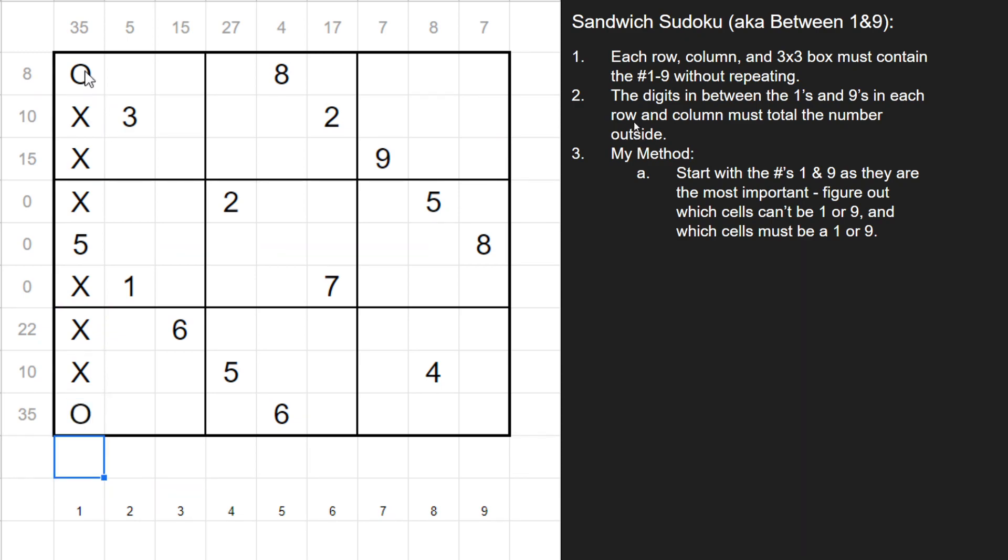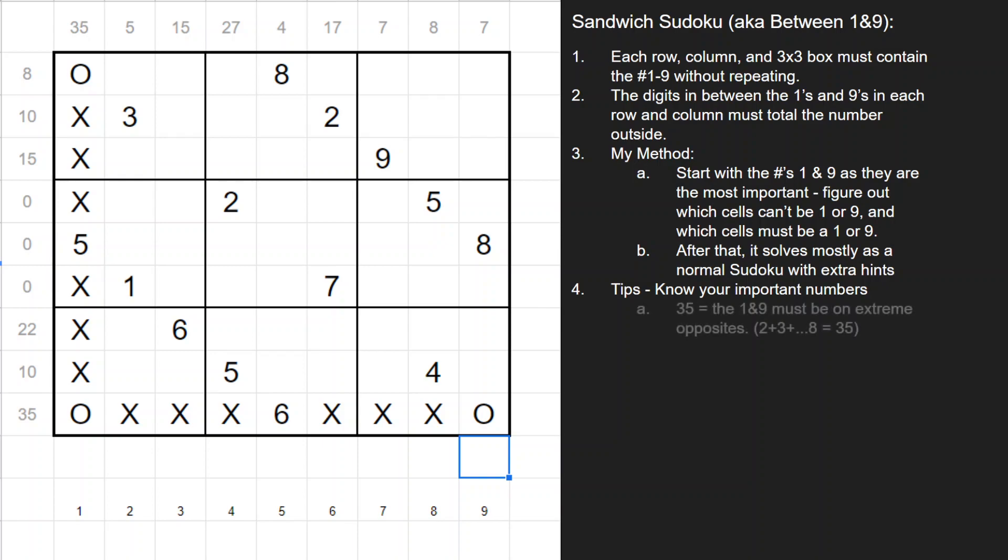That way I know that the 1 and the 9 must be in those cells. And then the same thing can be done with this bottom row here. Here we know that the 1s and 9s have to be on the edges. So all the cells in between I can indicate is not a 1 or a 9. And so I would continue to do this over and over again until I find all the 1s and 9s. Once you've done that, the rest of the game solves a lot like a normal sudoku, but just with some extra hints. So more tips is understand the important numbers. What I mean by that is the important sum. 35 again is probably the most important number to understand because that's the largest sum you can possibly have.